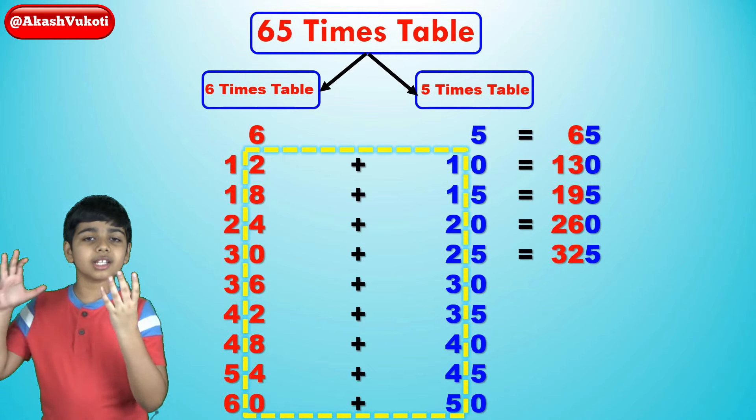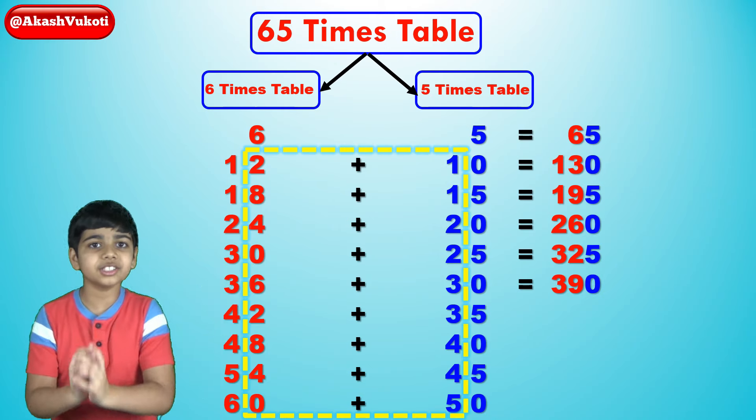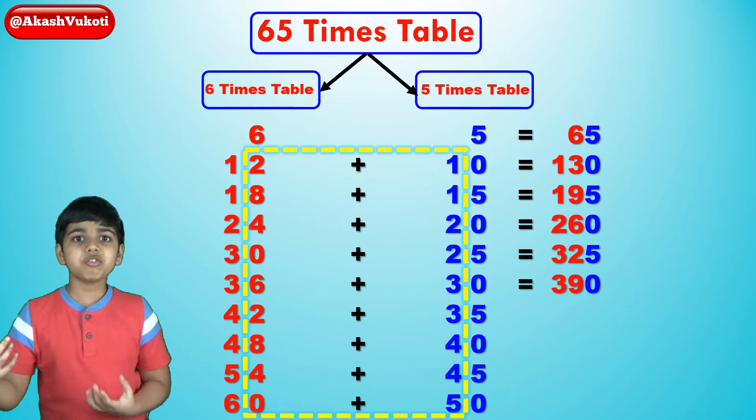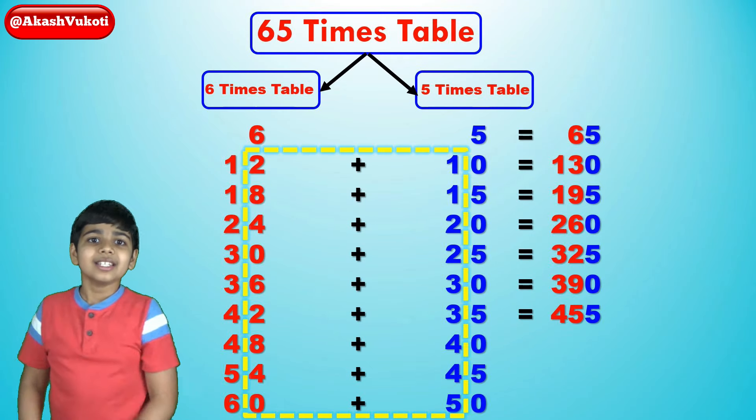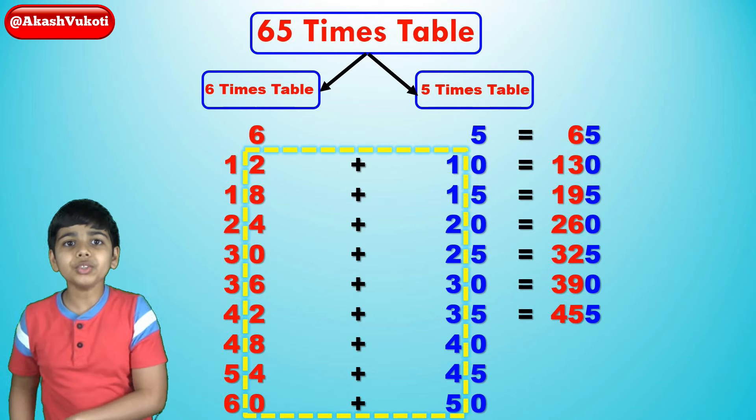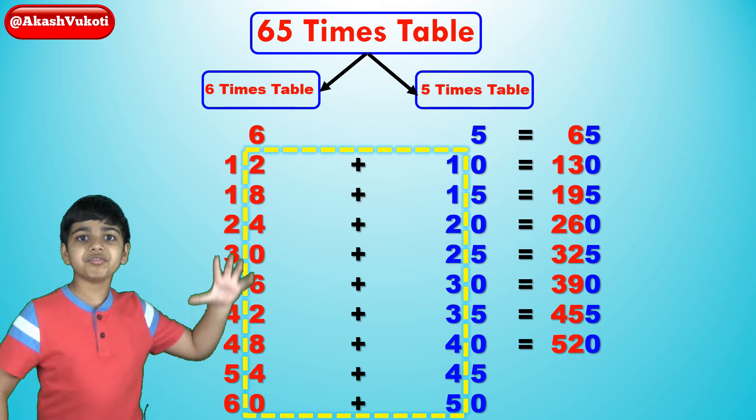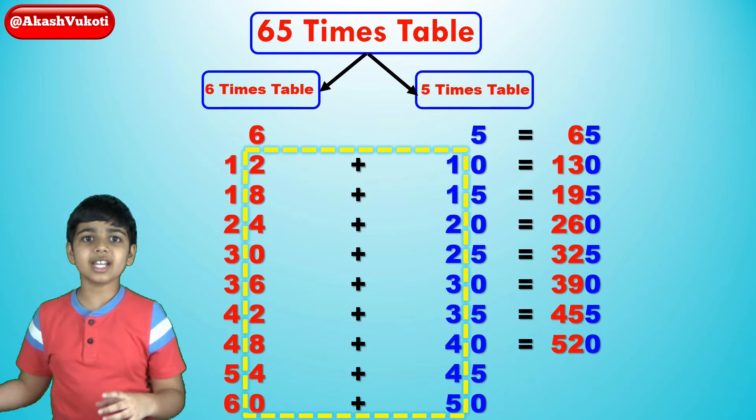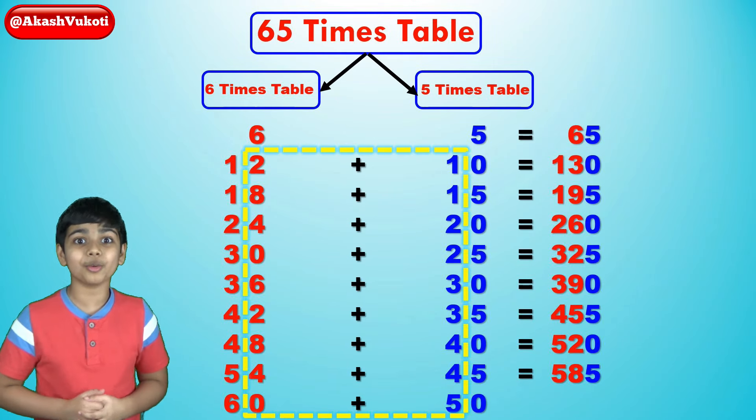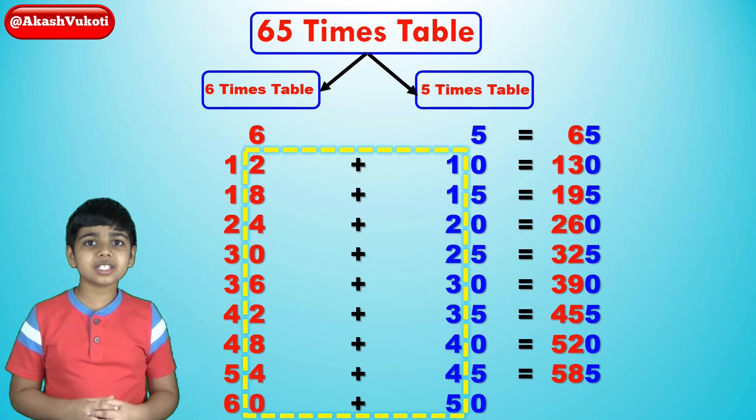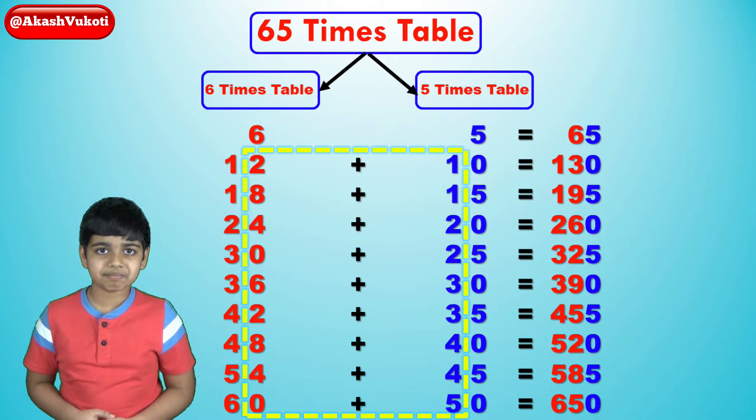Then 65 times 6 becomes 36 and 30, which becomes 390. Then 65 times 7 becomes 42, 35, 455 becomes that. Then 65 times 8 is 48 and 40, and now you have a 4 there to add to the 48. That gives it 52 and 520. Now, 65 times 9 becomes 54, 45. That's 585, which is a palindromic number. And finally, 65 times 10 is 60, 50. So, we get 650.